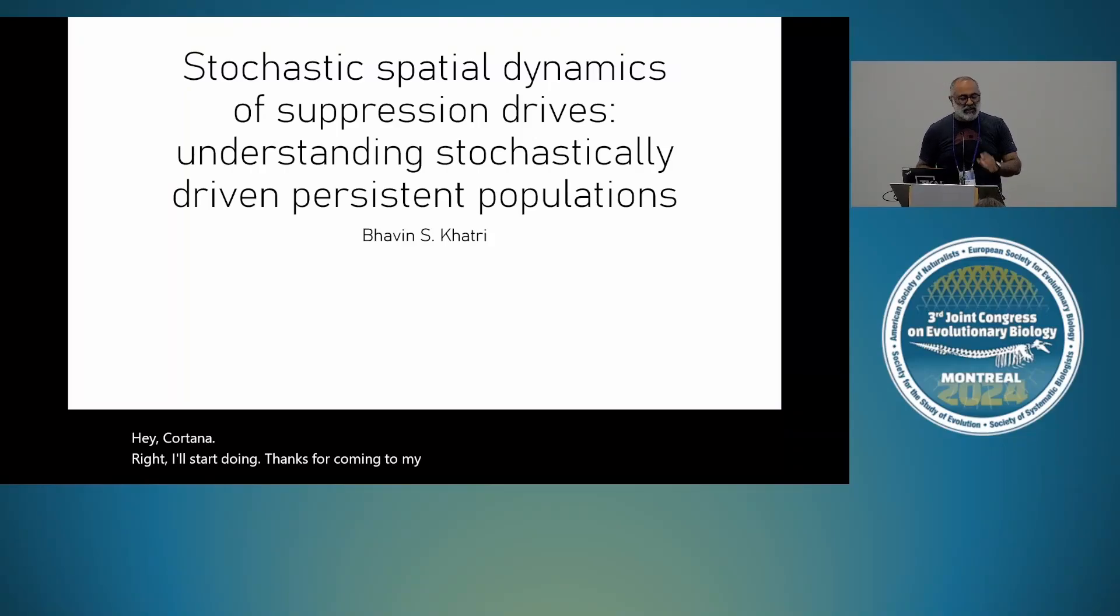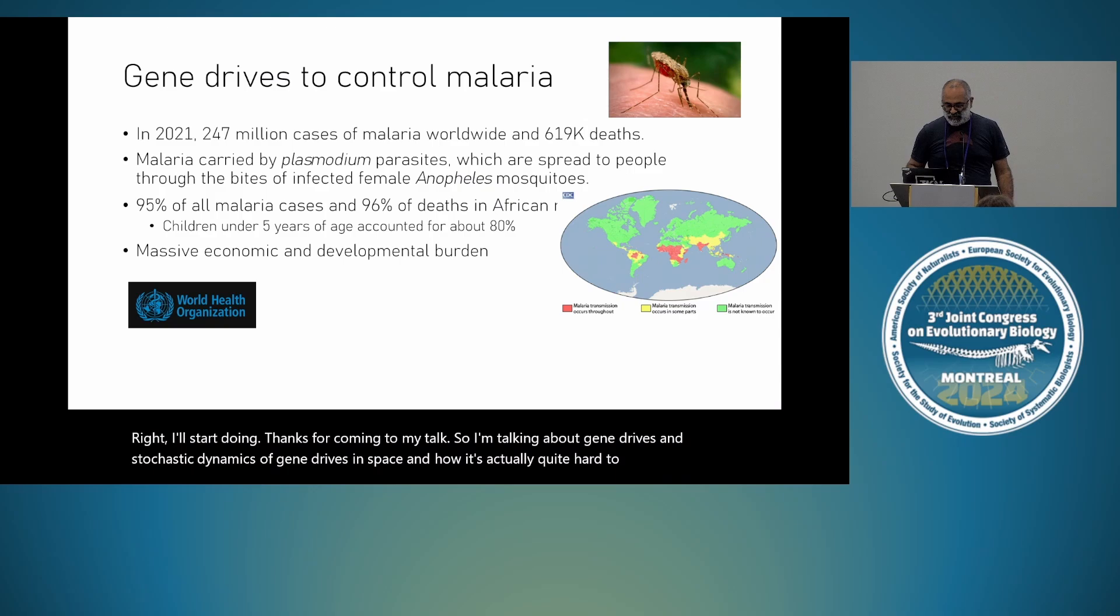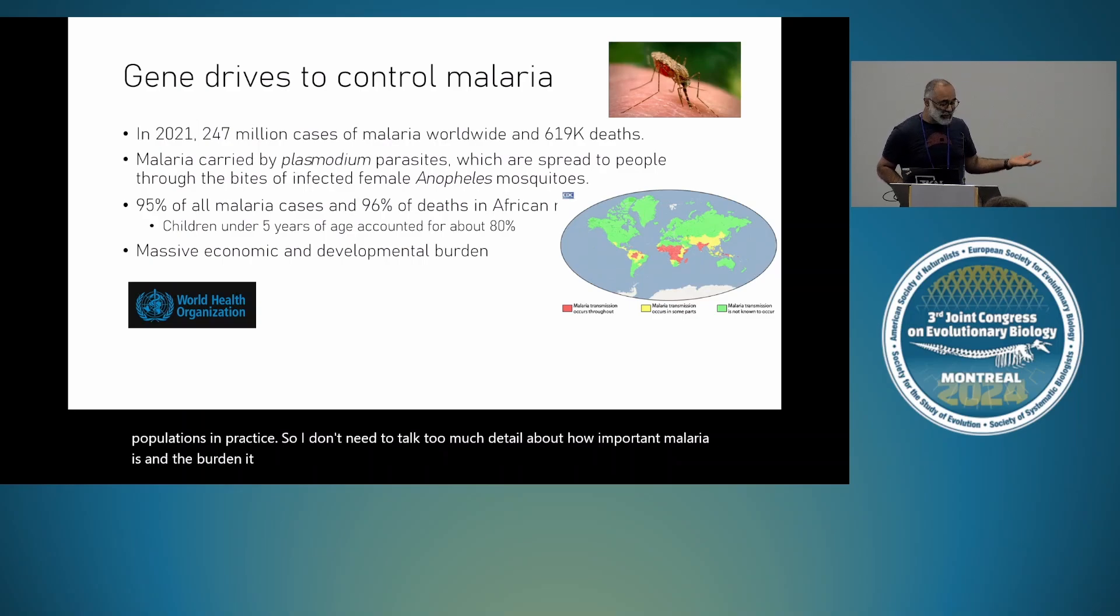Thanks for coming to my talk. I'm talking about gene drives and stochastic dynamics of gene drives in space and how it's actually quite hard to suppress populations in practice. I don't need to talk too much detail about how important malaria is and the burden it has on population in sub-Saharan Africa. So it'd be very nice to be able to find a way of controlling and suppressing mosquitoes that carry malaria.